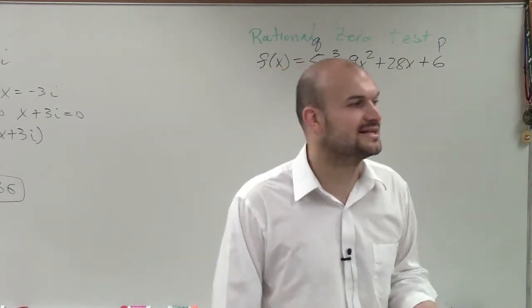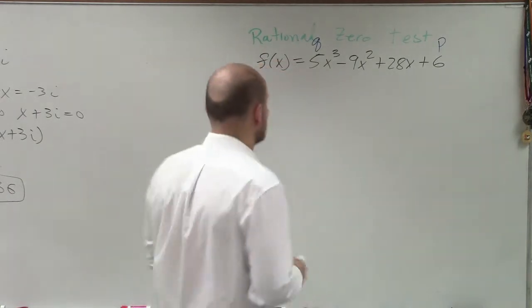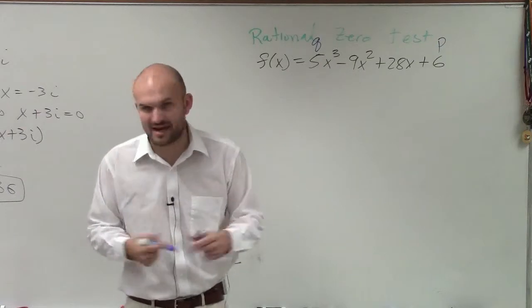Descartes' rule of signs is going to tell us the number of positive or negative real zeros that we will have. So to do that, the positive real zeros is pretty basic.